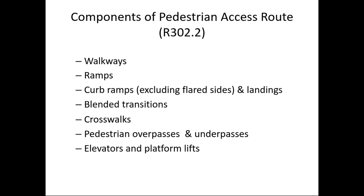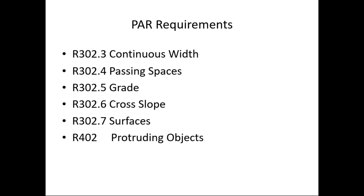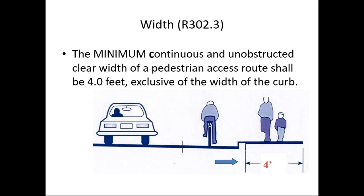Here are the PAR requirements and the appropriate sections in ProAg. The key elements are width, grade, cross slope, surface condition, and protruding objects. Starting with width: ProAg says the minimum continuous unobstructed clear width of the PAR shall be four feet, measured from the back of the curb and exclusive of the curb width. This must be free of both permanent and temporary obstructions.